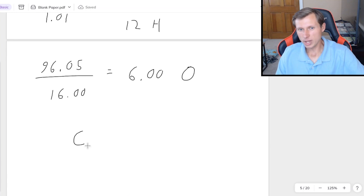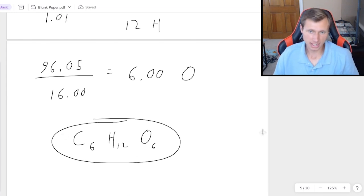So putting it all together, we had 6 for carbon, 12 for hydrogen, and 6 for oxygen, making this my final answer. And of course, this compound plays a very special role in biology. It's glucose.